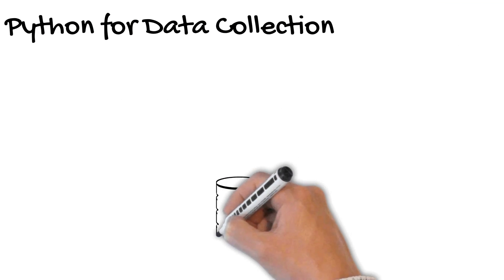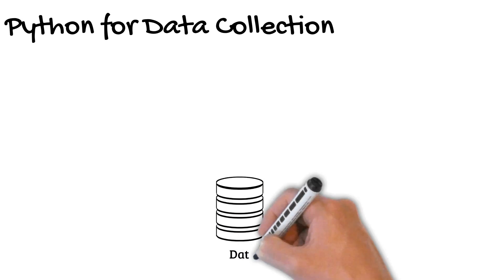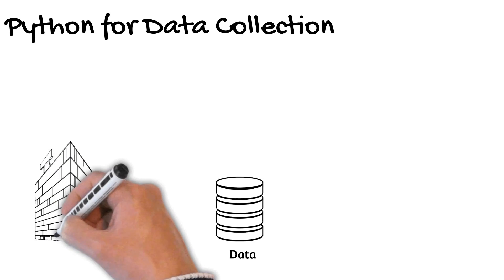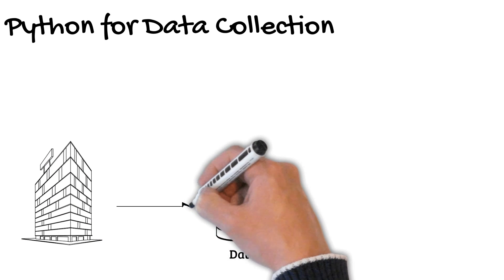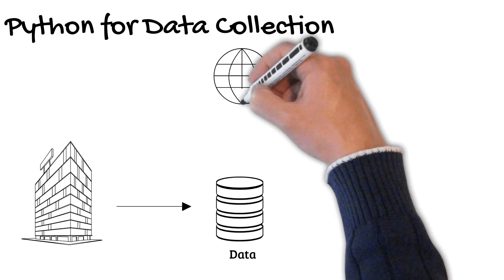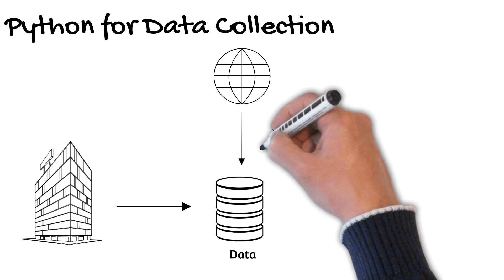After you master the basics, you can start learning the four elements we mentioned before. First is Python for data collection, which is all about collecting the data you need for your data science project. Usually the company you work for will give you this data, but in some cases you'll need to extract data from the internet using web scraping techniques.